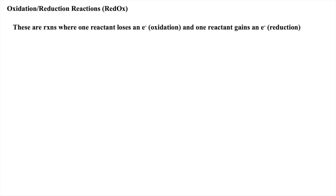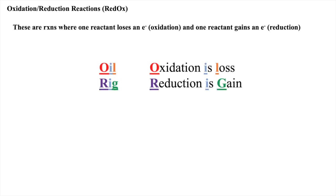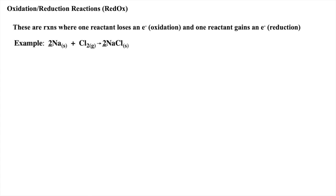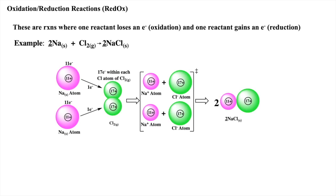Redox reactions are when one or more electrons are transferred between reactants. A simple way to remember and identify which reactant is being oxidized or reduced is the mnemonic device OIL RIG. To conceptualize this process, let's examine the redox reaction of elemental sodium and chlorine gas. Here we see that each atom of sodium donates an electron to chlorine, which affords two cations of sodium and two anions of chloride. Note that the atomic radius changes — smaller upon loss of electron and larger due to addition of electron.